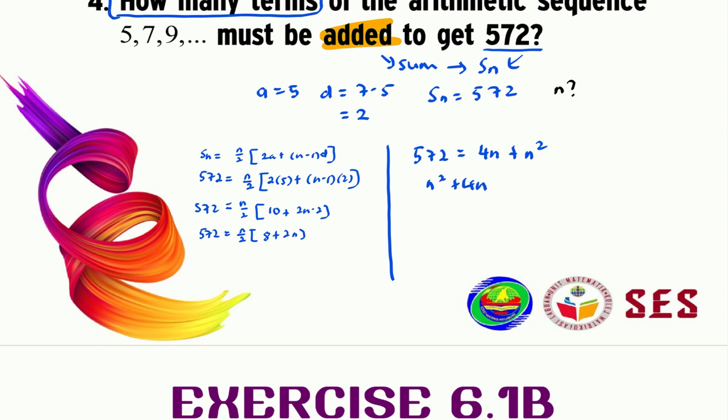We will simplify the denominator and rearrange this quadratic equation. We should get n squared plus 4n minus 572 equals 0. We need to make sure that it is in the simplest form before we factorize, and it is already so.